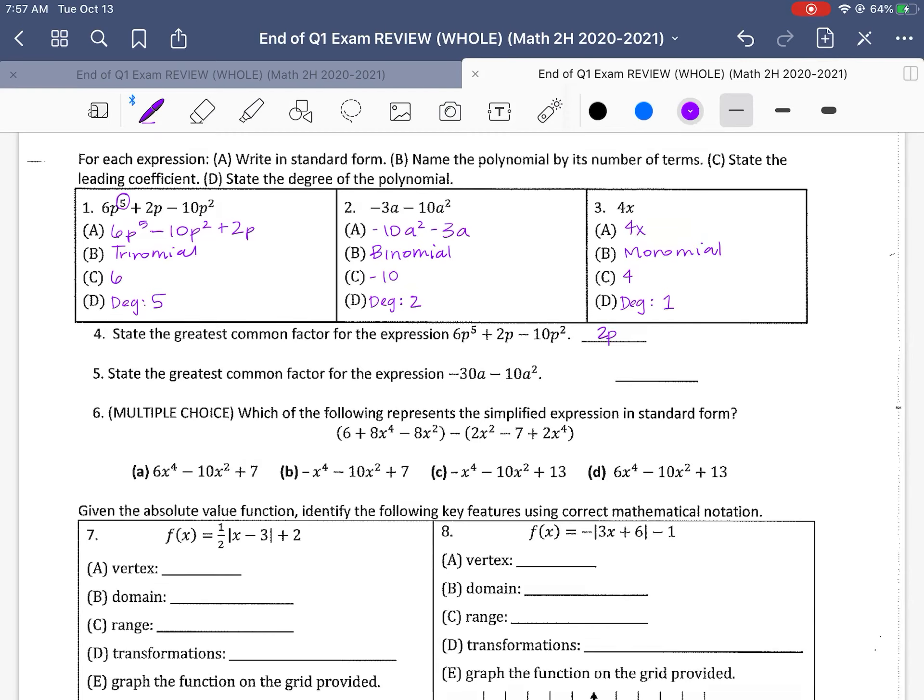Number 5, state the greatest common factor for the expression. If we're looking at this one, it looks like we have a negative 30a and a negative 10a squared. Those both divide by 10. And you can write negative 10 because you could pull a negative out of both of them or a positive 10. It doesn't matter when you're talking about the greatest common factor. However, if there is a double negative in there, I usually pull it out.